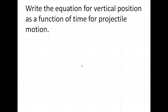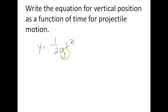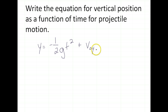So that is your first equation for today. Your next equation is the equation for vertical position as a function of time for projectile motion — this is our up and down position. That equation is y equals negative one-half gt squared. We've seen this gt squared and this one-half before, but we add a negative component because we're looking at downward motion. Then we add v naught y — just like the x, we have a y initial velocity — times t, plus y naught.